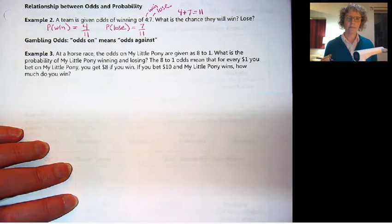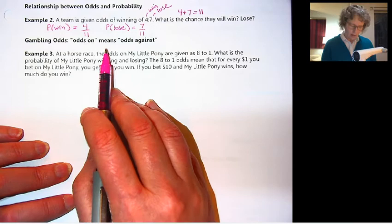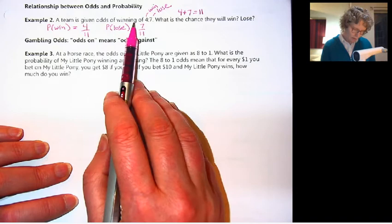So let's talk about gambling odds. When they talk about the odds on something, it means the odds against. So this one was phrased the odds of winning four to seven. So the winning was first, and the losing was second.